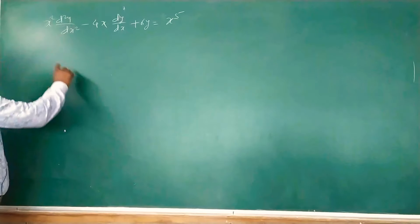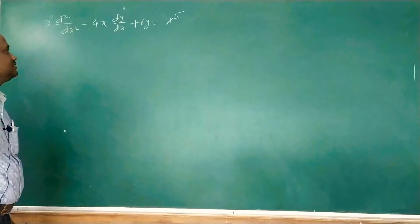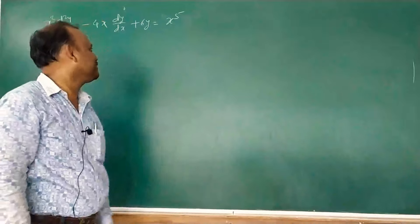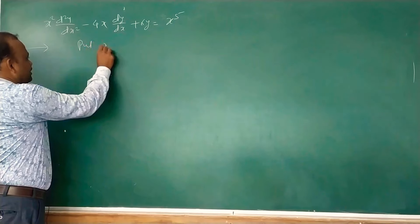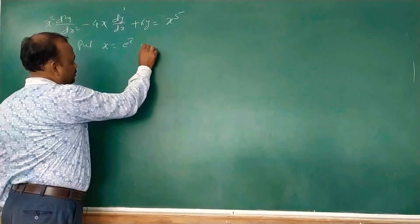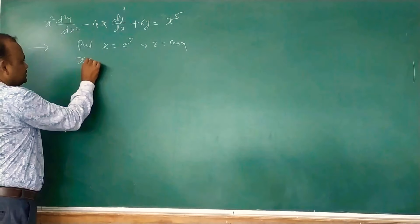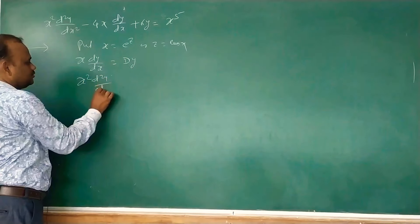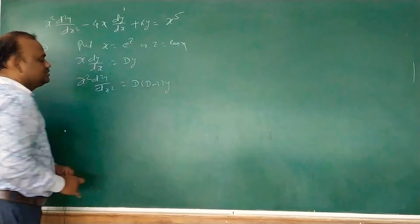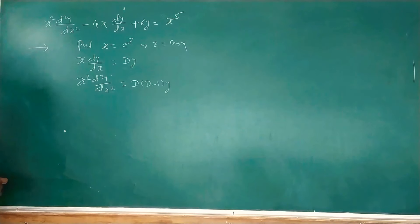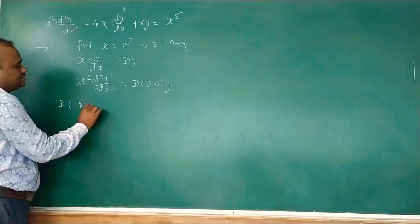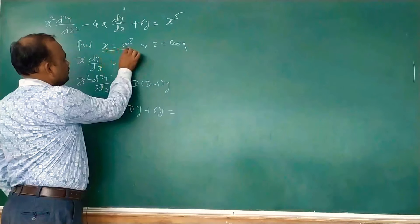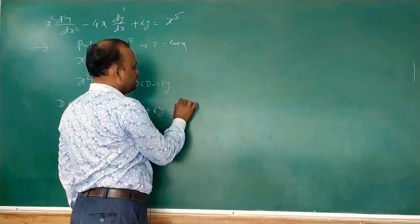The next problem is: solve x²·d²y/dx² − 4x·dy/dx + 6y = x⁵. This is again Cauchy's linear differential equation, so we convert it to an LDE with constant coefficients using the substitution x = e^z (or z = log x), giving x·dy/dx = D·y and x²·d²y/dx² = D(D−1)y. Substituting, x⁵ = (e^z)⁵ = e^(5z).